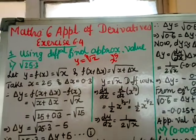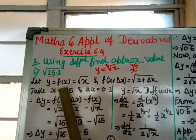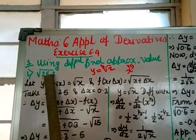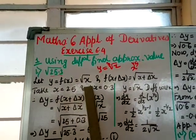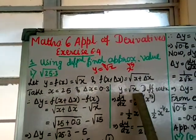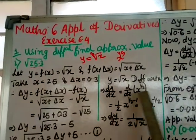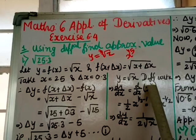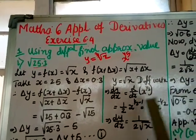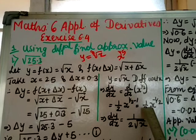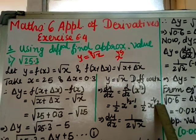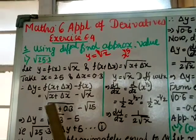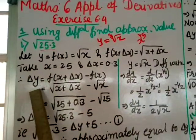I take x = 25 and δx = 0.3 because their sum is 25.3. Now differentiate y = √x with respect to x: dy/dx = d/dx of x^(1/2) = (1/2)x^(1/2 - 1) = (1/2)x^(-1/2) = 1/(2√x).